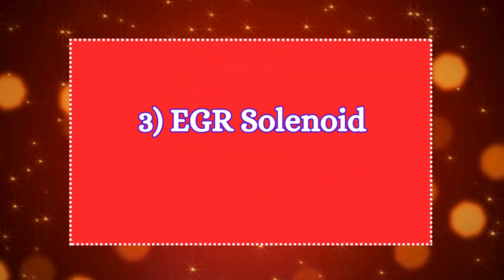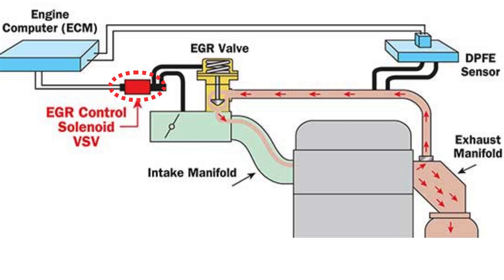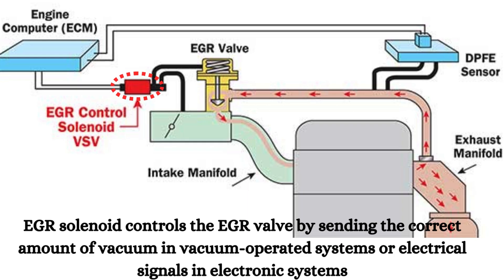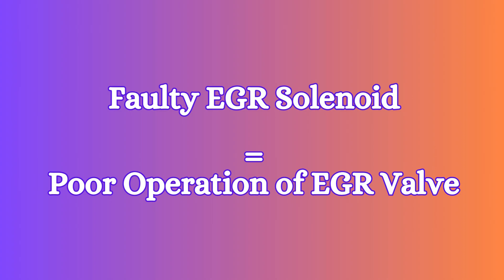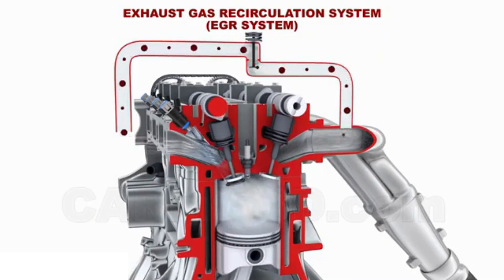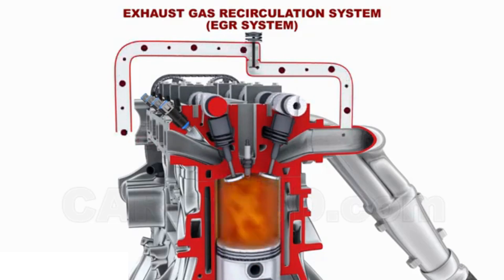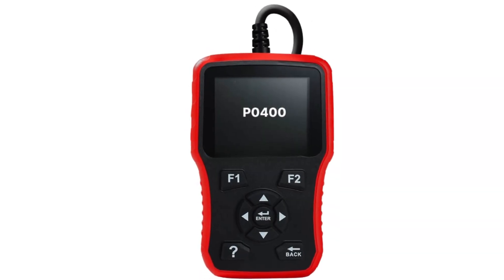Three: EGR solenoid malfunction. The EGR solenoid acts as a switch that controls the EGR valve by sending the correct amount of vacuum in vacuum-operated systems, or electrical signals in electronic systems. If the solenoid fails, it might not open the EGR valve at the right time. This improper timing disrupts the intended exhaust gas recirculation, leading to the P0400 code.